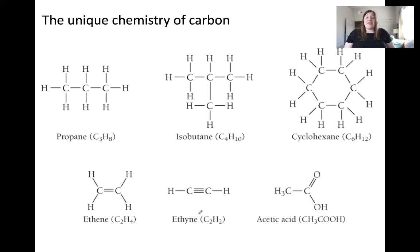Ethene and ethylene are two other examples of carbon and hydrogen containing molecules that have double bonds in the case of ethene or a double bond and a triple bond in the case of ethylene. All five of these molecules—propane, isobutane, cyclohexane, ethene, and ethylene—contain only carbon and hydrogen. Therefore, they are classified as hydrocarbons.